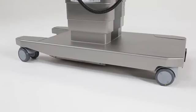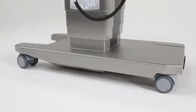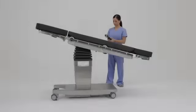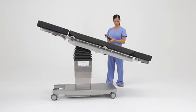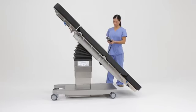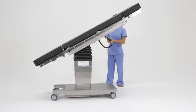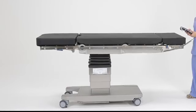Rising out of the strong foundation of the TS-7000 base is the column, the muscle and brains of the table. With the TruSystem 7000, Trumpf continues our tradition of using electromechanical motors, not complicated hydraulic systems. This gives us exceptional reliability, but also enables many intelligent features.